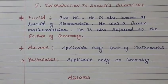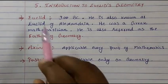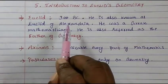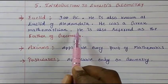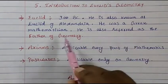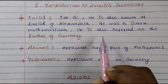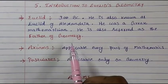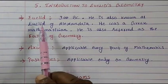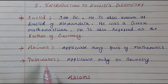Hi everyone, today we are going to study from Class 9th, Chapter 5: Introduction to Euclid's Geometry. Who is Euclid? He lived around 300 BC, also known as Euclid of Alexandria in Egypt. He was a Greek mathematician and is referred to as the father of geometry.